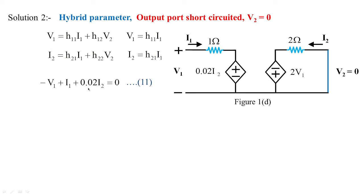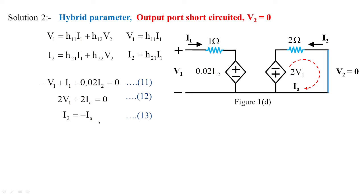For the output loop, a loop current iA is assumed in the clockwise direction, giving 2v1 + 2·iA = 0 (equation 12). Since iA is opposite to i2, we have i2 = minus iA (equation 13). Substituting equation 13 into equation 12 gives v1 = i2 (equation 14). This relationship between v1 and i2 is a key result.